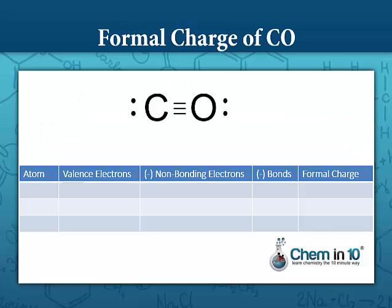Here's the Lewis dot structure of carbon monoxide. Notice that carbon and oxygen are bonded through a triple bond and they each have a lone pair.